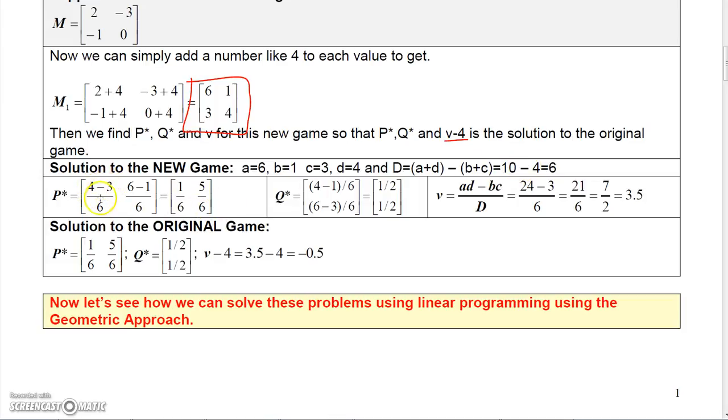So we would have 4 minus 3 over 6. Go back to the other formulas and see how we calculate this using these values. 6 minus 1 is 5, so we have 5 over 6. So we have 1 over 6 and 5 over 6 for P star. For Q star, we would have 4 minus 1 over 6, which is 1 half, and 6 minus 3 over 6, which is 1 half. For V, we would have AD minus BC over D, which turns out to be 24 minus 3 over 6, which is 21 over 6, or 7 over 2, which is actually 3.5.